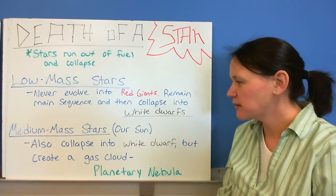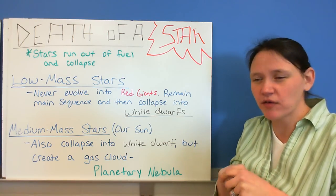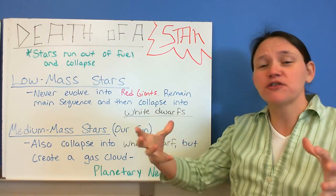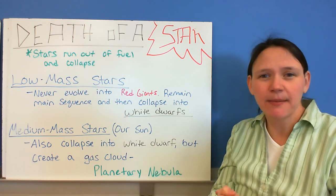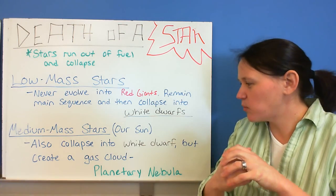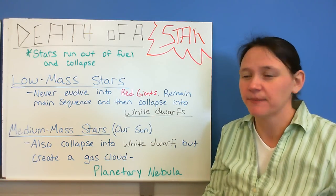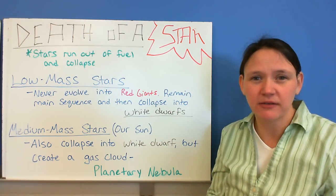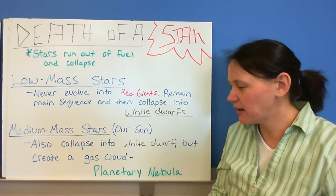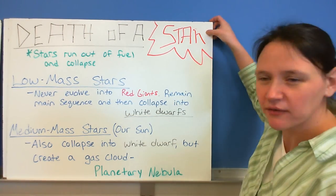Medium stars, like our Sun, they also collapse on themselves after they use up all of their fuel. But because there was more to start with, that collapse creates a little bit of an explosion, and you end up with a gas cloud that forms around that white dwarf. And we call that a planetary nebula. And there's a lot of pictures of planetary nebulas that you can see online. And a lot of them are really pretty cool looking. So if you get a chance, check that out.